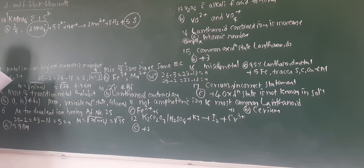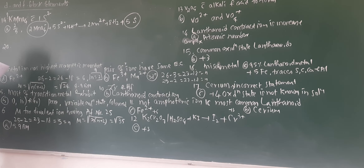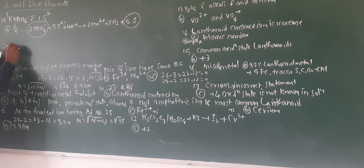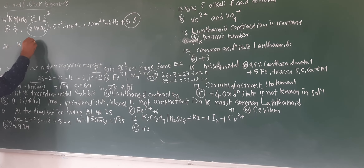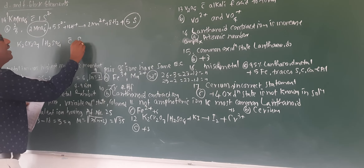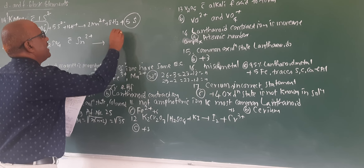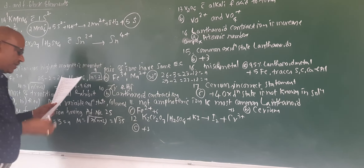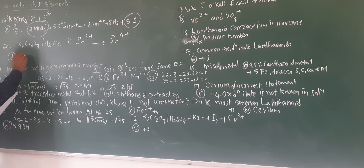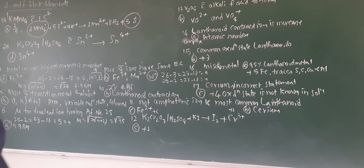The last question: acidified K₂Cr₂O₇ is added to Sn²⁺ salt. After the reaction, Sn²⁺ is oxidized to Sn⁴⁺. Therefore the correct option is D — Sn⁴⁺.